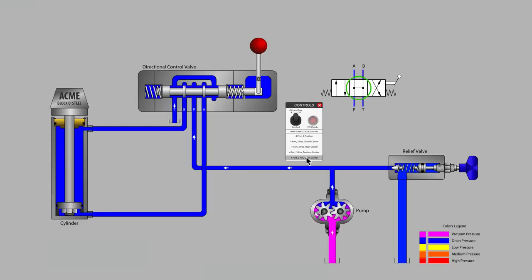Unlike the closed center and float center which featured a blocked P port when the valve was in neutral, the tandem and open center valves circulate the pump's flow back to tank at neutral.